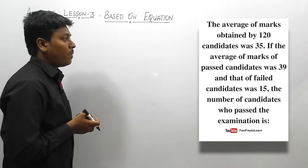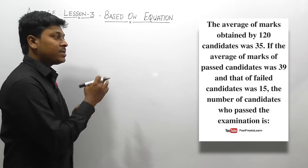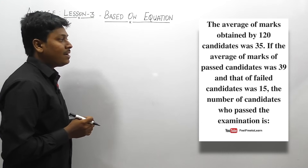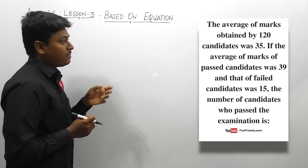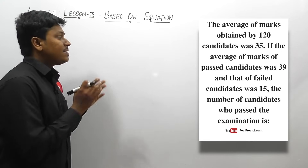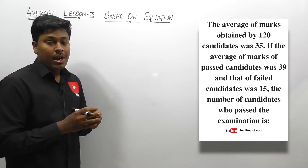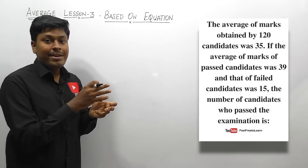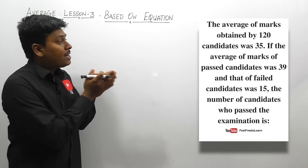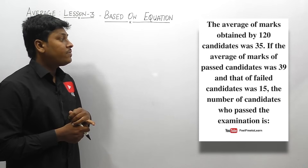Question number one: the average marks obtained by 120 candidates was 35. If the average marks of passed candidates was 39 and that of failed candidates was 15, then find the number of candidates who passed the examination. The total number of candidates is 120, their average is 35, and some have passed while others have failed.